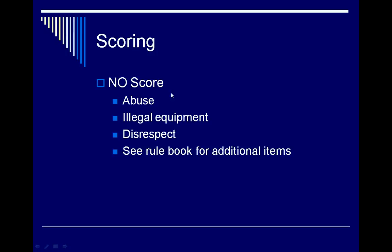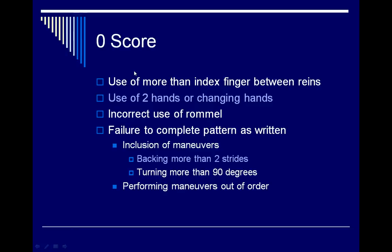For a no score — which is even less than a zero score — these are things such as abuse, use of illegal equipment, disrespect, and other things identified in the rule book as a no score.